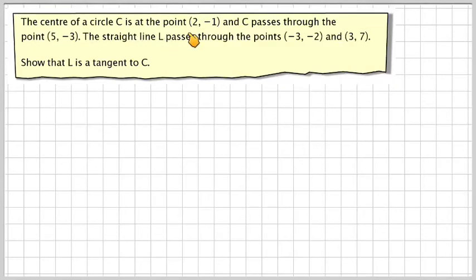The centre of the circle is at the point (2, -1), and C passes through the point (5, -3). The straight line L passes through the points (-3, -2) and (3, 7). Show that L is a tangent to C.